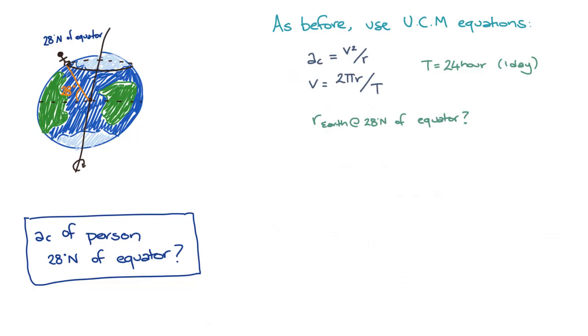If we sketch out the path the person follows alongside the radius of the Earth, we can see that the person will follow a different circular path with a different radius than they did in the problem before.